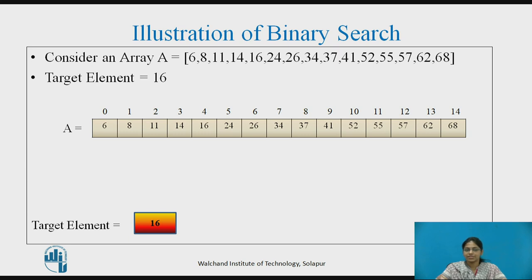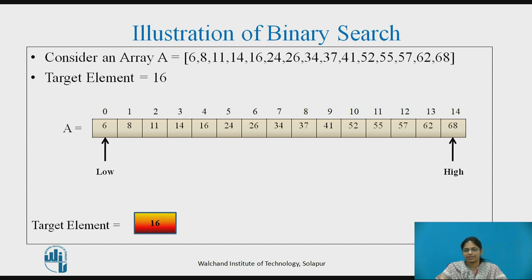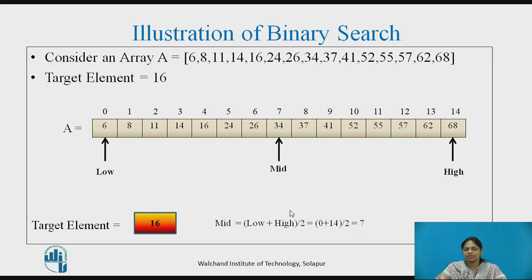Let us see the illustration of binary search. Consider an array A which consists of 15 elements, all sorted. Our task is to find the target element 16. The array begins at index 0 and ends at index size minus 1. To find the target element, we need two pointers: low, initialized to index 0, and high, initialized to index 14. We ensure low is always less than or equal to high. We compute mid as low plus high divided by 2, giving 7, so mid is placed at index 7.